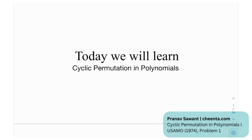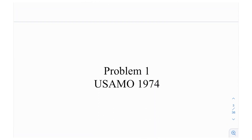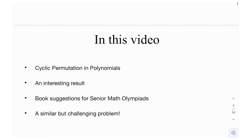Today we're going to look at a couple of very interesting results through a problem. This has to do with cyclic permutations in polynomials. The things we're going to discuss today are very fundamental to polynomial algebra, and in many modern-day problems these results are used directly without proof. This is Problem 1 from the USAMO exam in 1974. We're going to talk about cyclic permutation polynomials and prove a couple of important results.